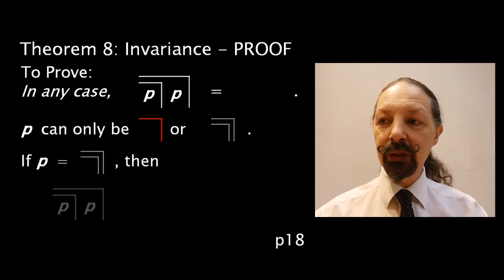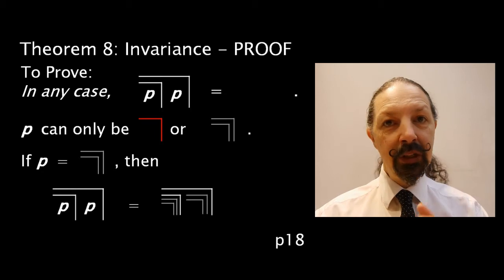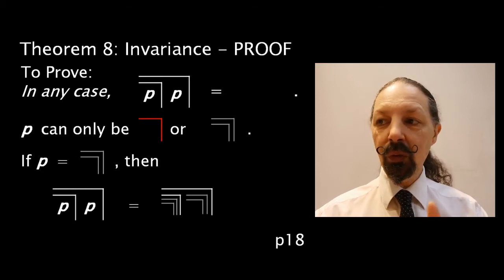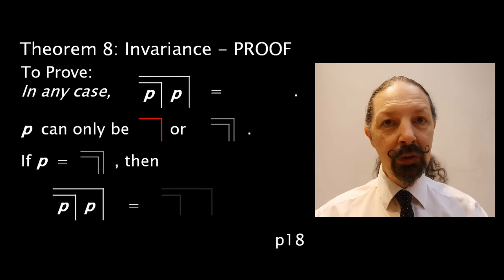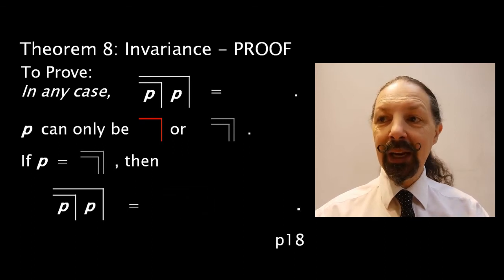What about p as an unmarked state? Well, we substitute, we find that we can cancel, we can cancel again, and a third time. And that also reduces to an unmarked state.